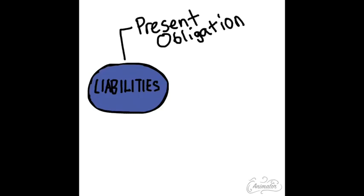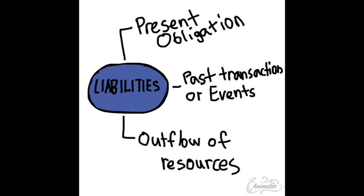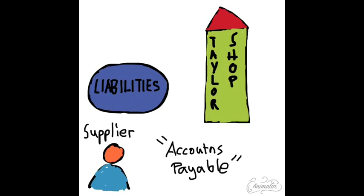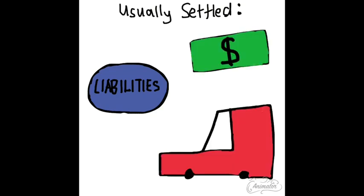Liabilities are present obligations of the entity arising from past transactions or events, and the settlement of which is expected to result in an outflow from the entity's resources. Her liabilities would be the unpaid payables to the suppliers of Tailor Shop — we could also call it accounts payable. Liabilities are usually settled by payment of either cash or a non-cash asset.